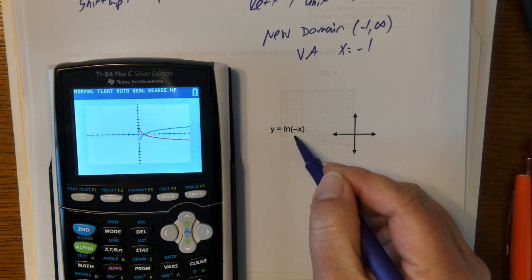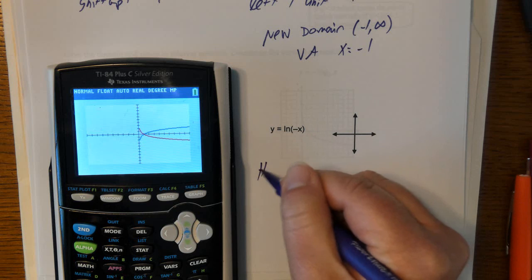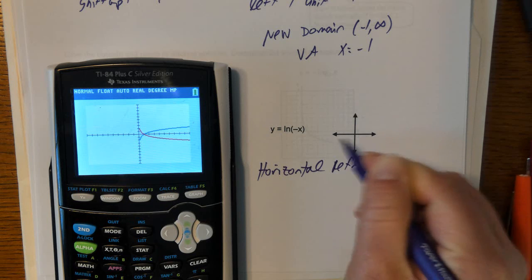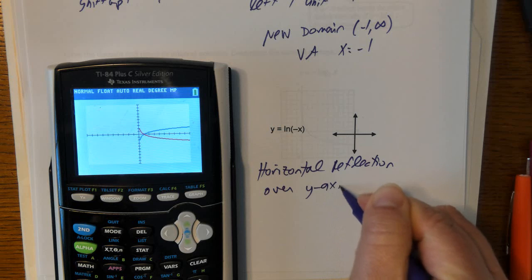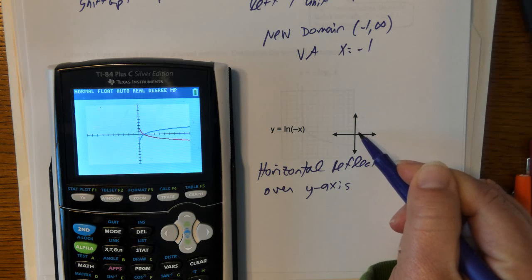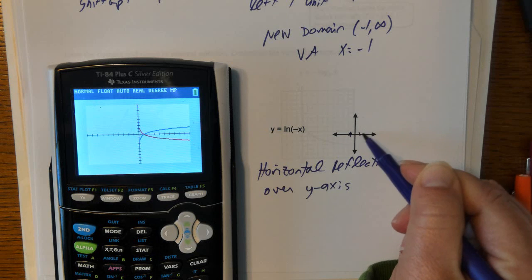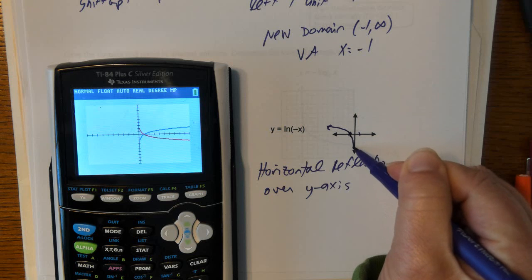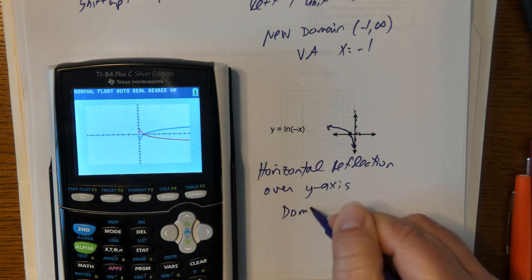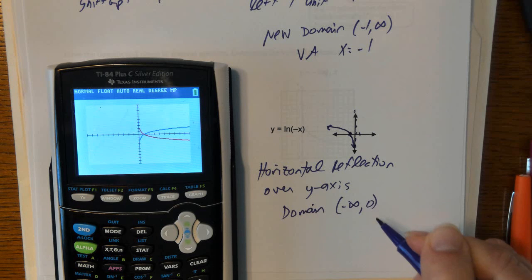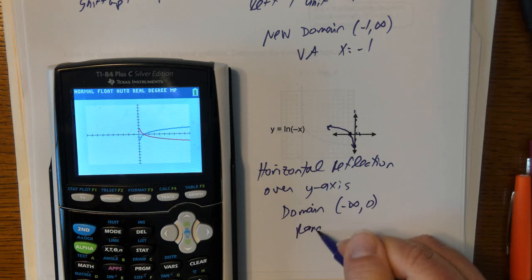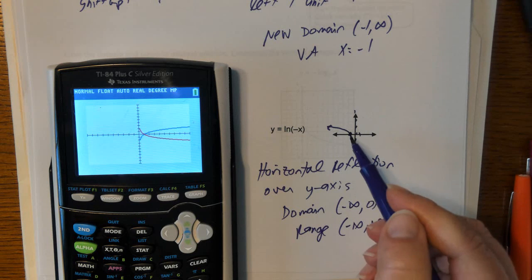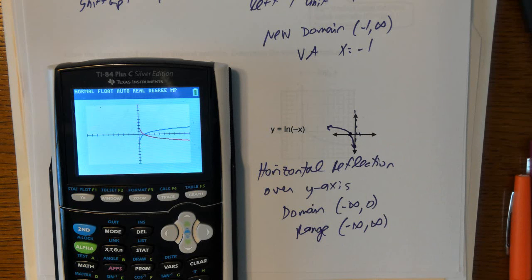For ln(-x): still a reflection, but this time the negative is in the parentheses with the x — that means it's a horizontal reflection over the y-axis. That key point that used to be at (1, 0) reflects over to (-1, 0). The part that used to travel up to the right now flips to travel up to the left. It used to drop down on the right, but now when flipped, it drops down on the right side. The domain is now negative infinity to 0. The range is still negative infinity to positive infinity, and there's still a vertical asymptote at x = 0. The x-intercept instead of being at (1, 0) is now at (-1, 0). That's a good start on these log functions for our first video.